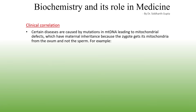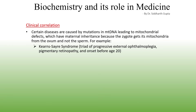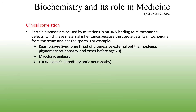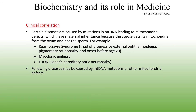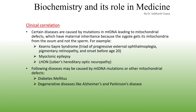Some diseases are specifically caused by mutations in mitochondrial DNA and show maternal inheritance, because the zygote at fertilization gets its mitochondria from the ovum and not the sperm. Examples include Kearns-Sayre syndrome — with a characteristic triad of progressive external ophthalmoplegia, pigmentary retinopathy, and onset before age 20 — as well as myoclonic epilepsy and Leber's hereditary optic neuropathy. Other diseases that may be caused by mitochondrial DNA mutations or mitochondrial defects include diabetes mellitus and degenerative diseases like Alzheimer's and Parkinson's disease.